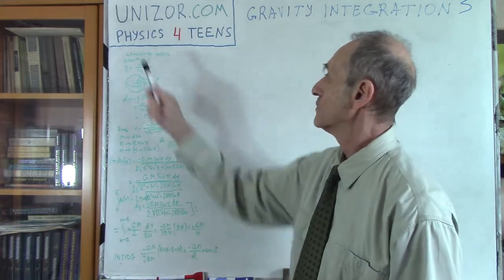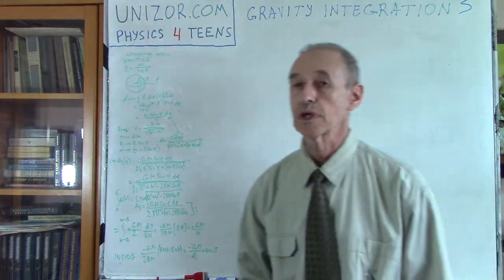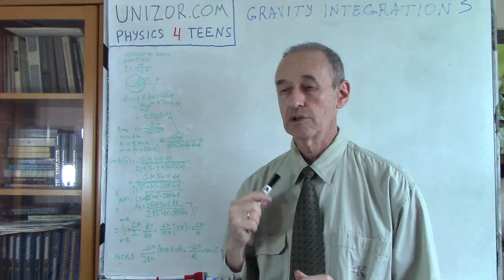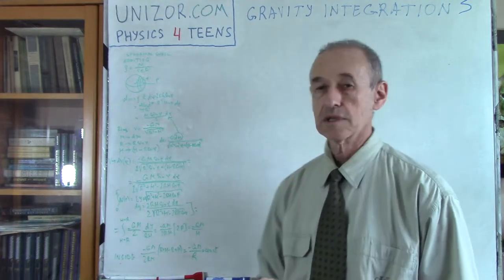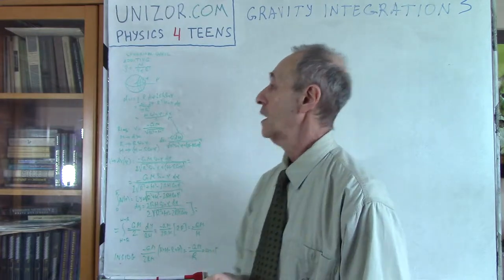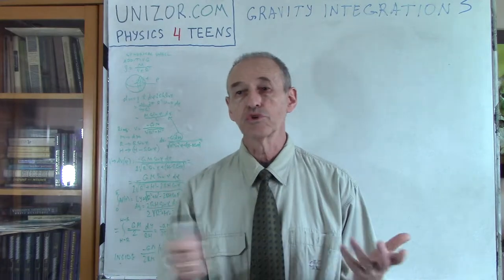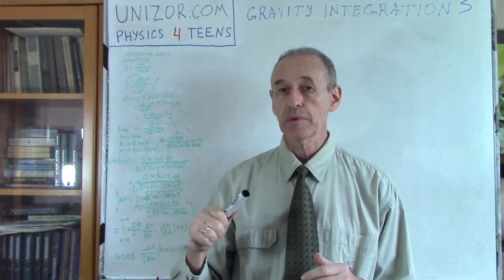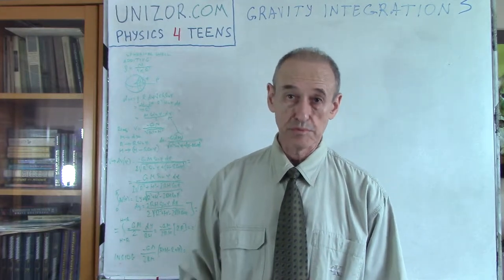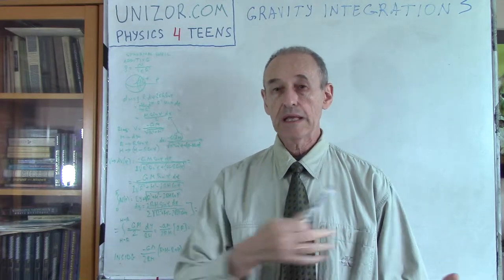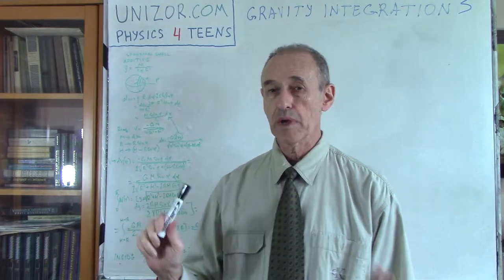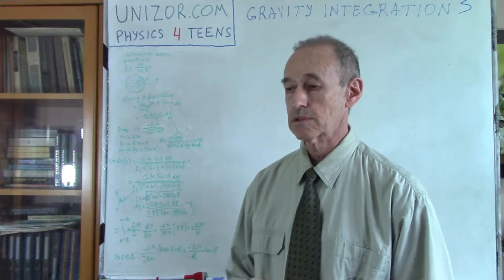This lecture is part of the course called Physics for Teens, presented on unizor.com. On the same site, there is a prerequisite course called Math for Teens, which is definitely a very needed course of mathematics for this particular course of physics, because I'm using calculus and vector algebra all the time. If you found this lecture on YouTube or any other source but unizor.com, I recommend you go to unizor.com, because it's a course where all lectures are logically connected. The site is free, by the way — no advertisements, no strings attached at all.